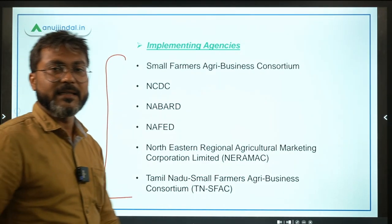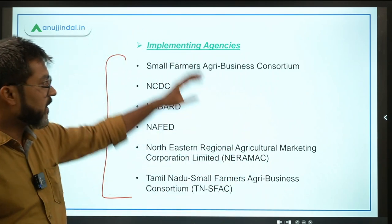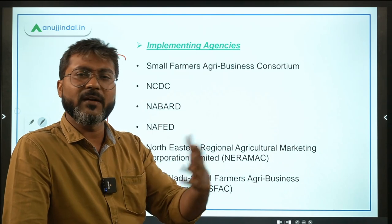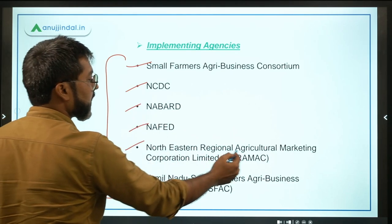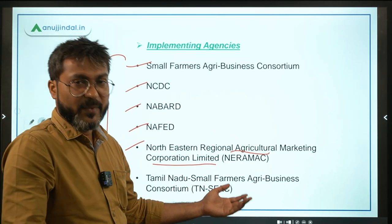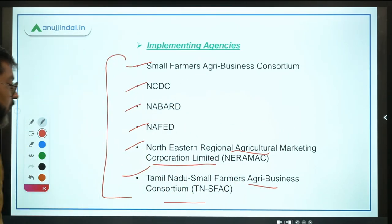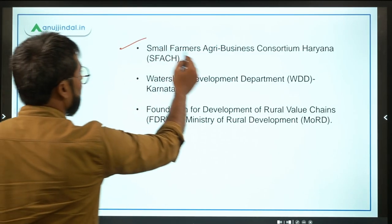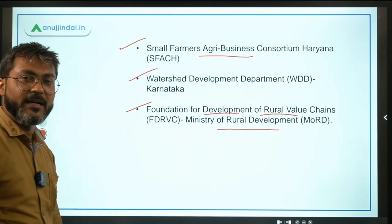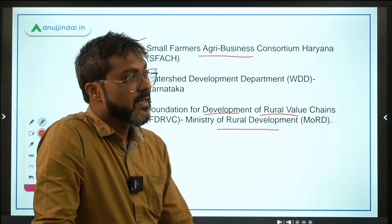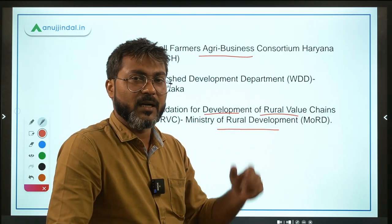There are 9 implementing agencies under this scheme, each with a different role. These include: Small Farmers Agribusiness Consortium, National Cooperative Development Corporation, NABARD, NAFED, Northeastern Regional Agricultural Marketing Corporation Limited (NERAMAC), Tamil Nadu SFAC, Small Farmers Agribusiness Consortium Haryana, Watershed Development Department of Karnataka, and Foundation for Development of Rural Value Chains under the Ministry of Rural Development. When the scheme was launched there were only 3, but from 1st February 2021 the number increased to 9.